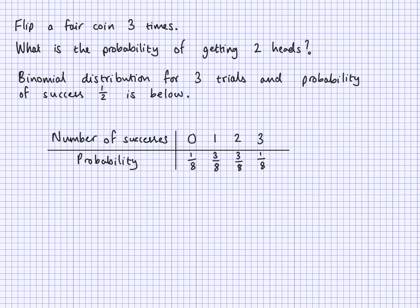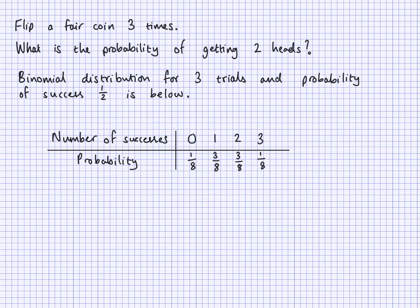So here I will start with a couple of examples and then I'm going to talk in general terms, and then finally I'll give you some questions to do. This is the second part. This is the same example that we had in the first part — flipping a fair coin three times and finding the probability of getting two heads. We said this can be found using the binomial distribution. This is the binomial distribution for three trials and probability of success one-half.